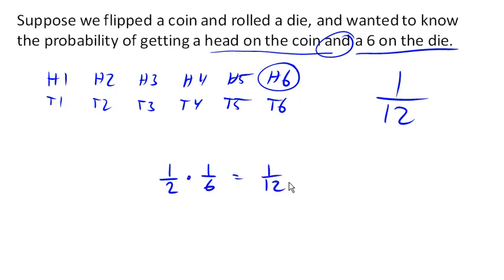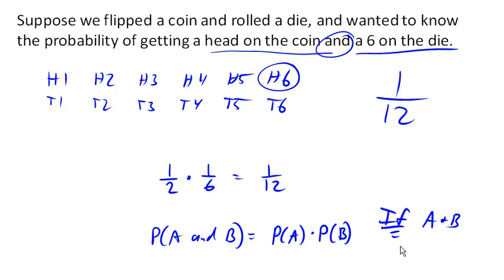And it turns out to be true that the probability of both events happening is the probability of A times the probability of B if A and B are what's called independent. Now independence means that the result of the coin flip does not depend or affect the result of the roll of the die.